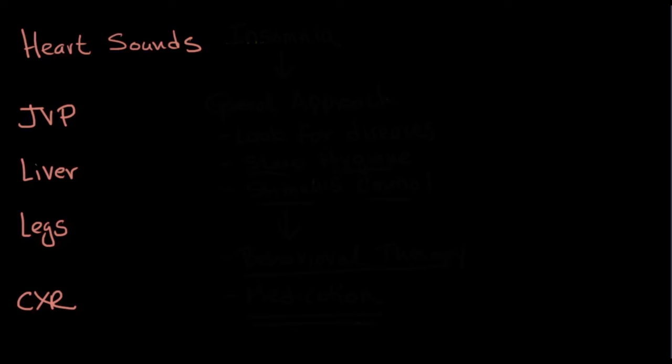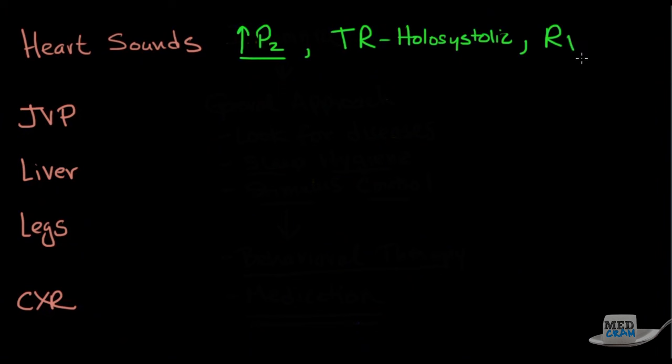The first thing that you're going to notice here is that there's going to be a loud P2, and that's because of the pulmonary hypertension that is closing very hard the pulmonic valve. The other thing that you're going to notice is a murmur of tricuspid regurgitation, which is holosystolic. You're also going to have right ventricular heave that you might feel.